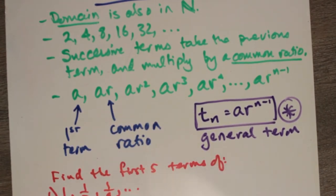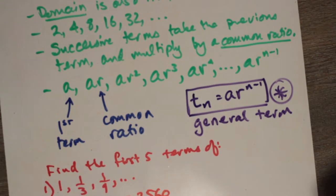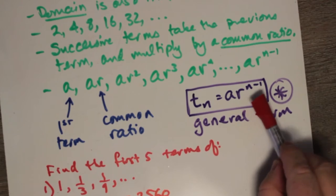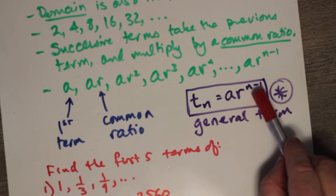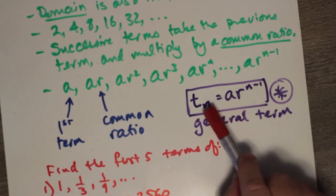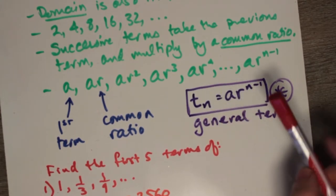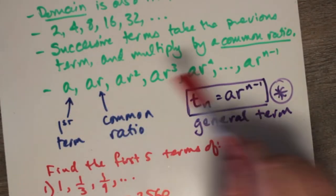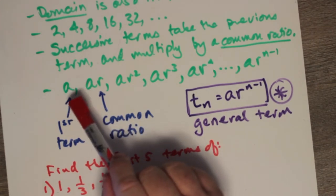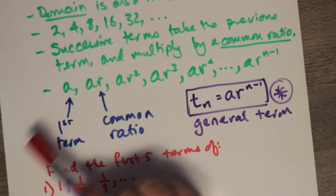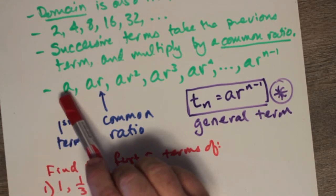That's how you reason out a common ratio. So the general term, instead of being a plus d times (n minus 1) like in arithmetic sequences, you have a — your first term — multiplied by your common ratio to the power of n minus 1, where n is the nth term. For the first term, n minus 1 is 0, so this is really a times r to the 0, which is just a, because anything to the power of 0 is 1.